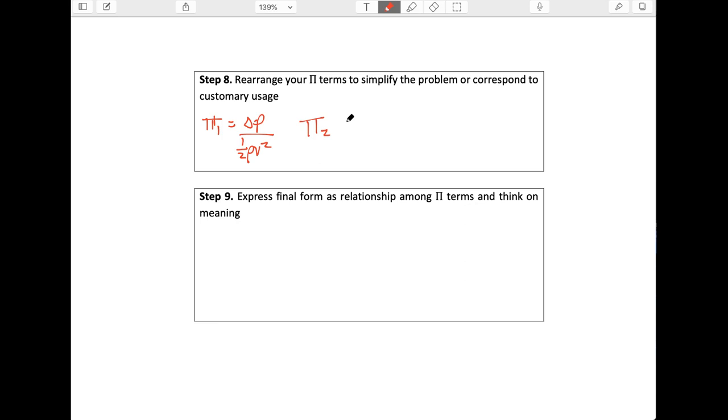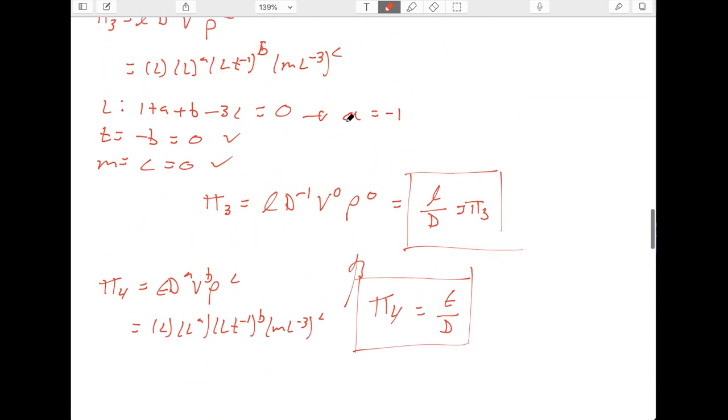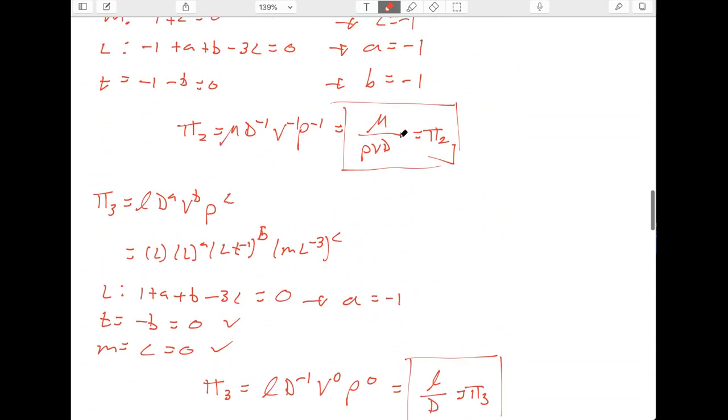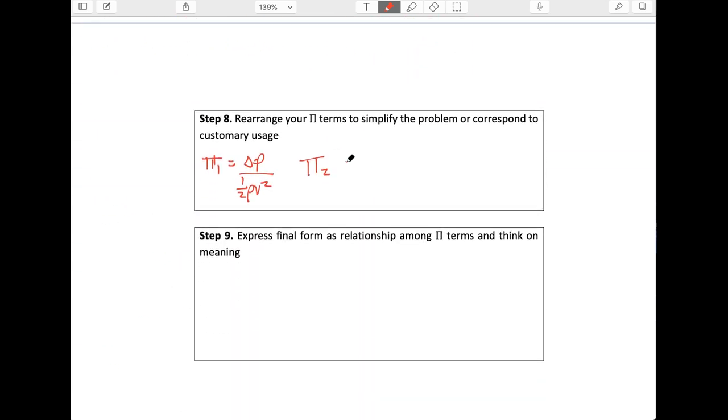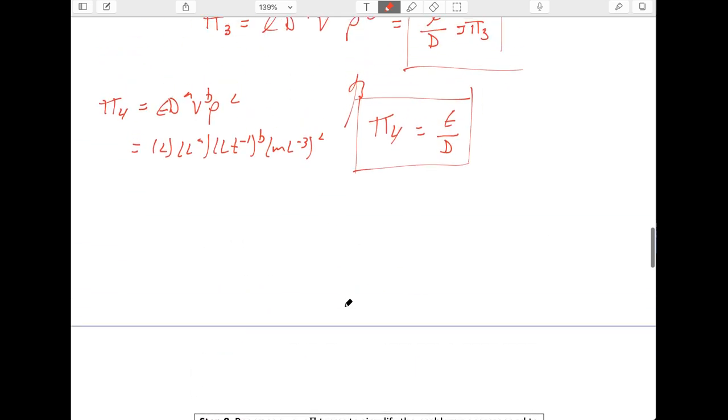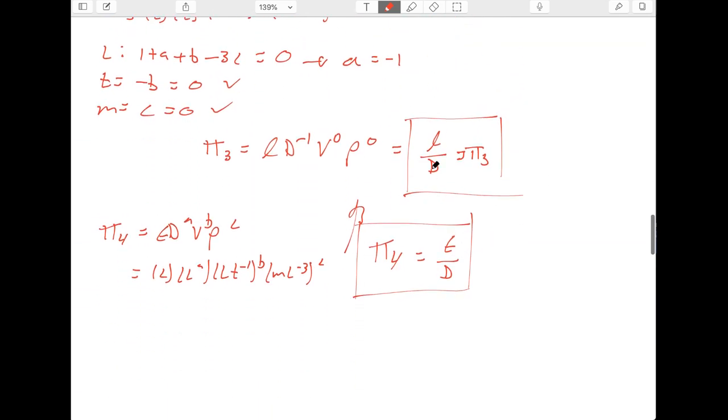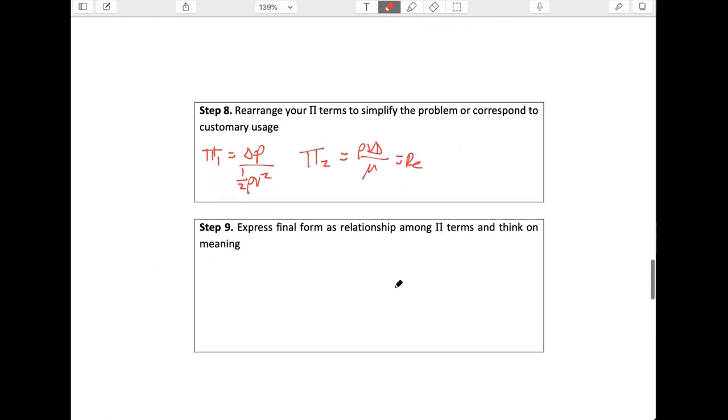Pi two might look familiar. Pi two, once again, looks like one over the Reynolds number. So we can just replace that with the Reynolds number, rho V D over mu. Just a reminder, that's the Reynolds number. And then pi three looks like L over D. Pi four looks like epsilon over D. We'll leave those alone.